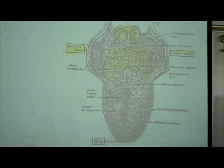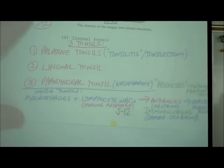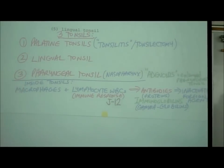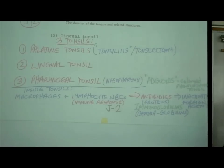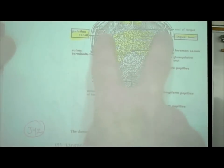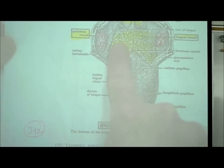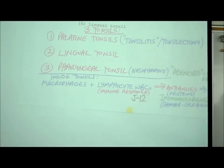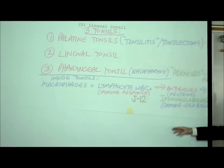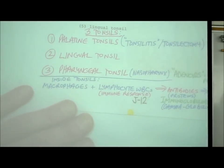We actually have three sets of tonsils: the palatine tonsils, the lingual tonsil, and a third one called the pharyngeal tonsil. The palatine tonsils are on the sides of the oral cavity. The lingual tonsil is on the top back surface of the tongue. The pharyngeal tonsil is at the back of the nose in an area called the nasopharynx.